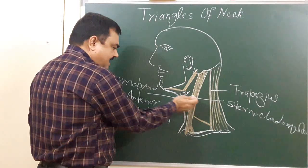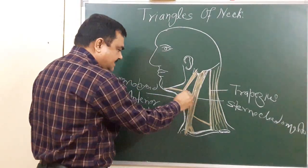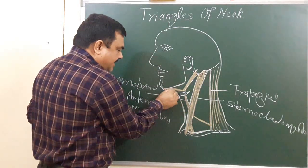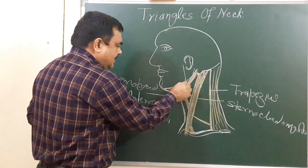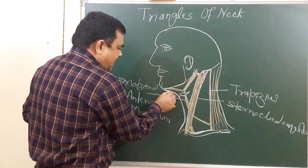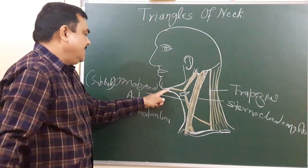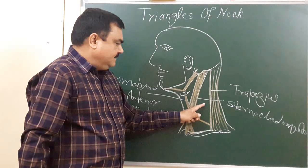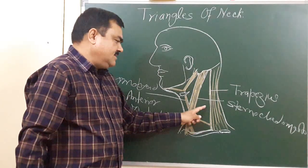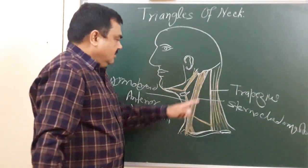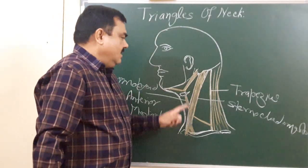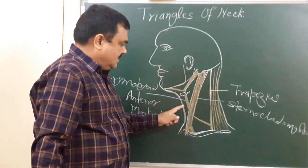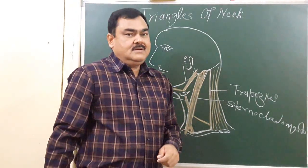The anterior triangle is divided into the carotid triangle, the muscular triangle, and the submandibular triangle. The posterior triangle is divided into two parts: the occipital triangle and the supraclavicular triangle. So there are several triangles formed on the lateral side of the neck and we will discuss each one by one. Thank you for this introduction to the triangles of the neck.